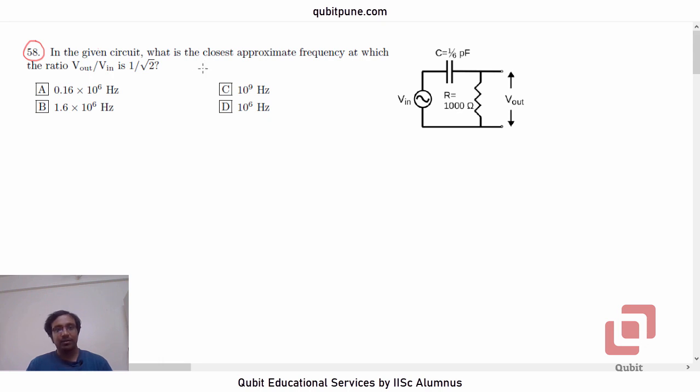In the given circuit, what is the closest approximate frequency at which the ratio Vout by Vin is 1 upon root 2? Options: 0.16 into 10 raised to 6 Hertz, 1.6 into 10 raised to 6 Hertz, 10 raised to 9 Hertz, and 10 raised to 6 Hertz.